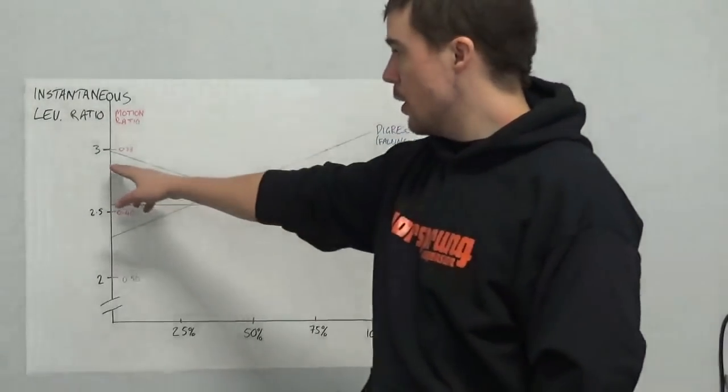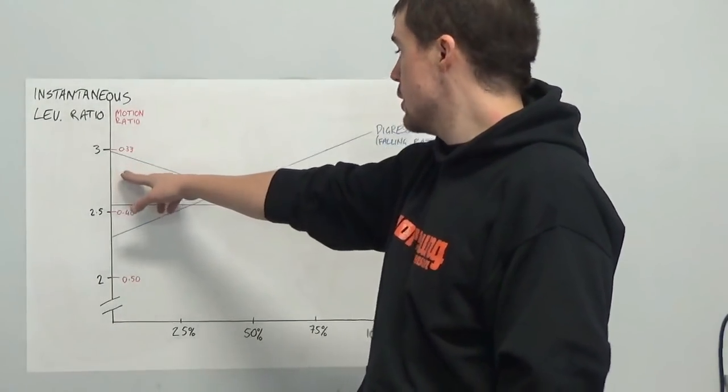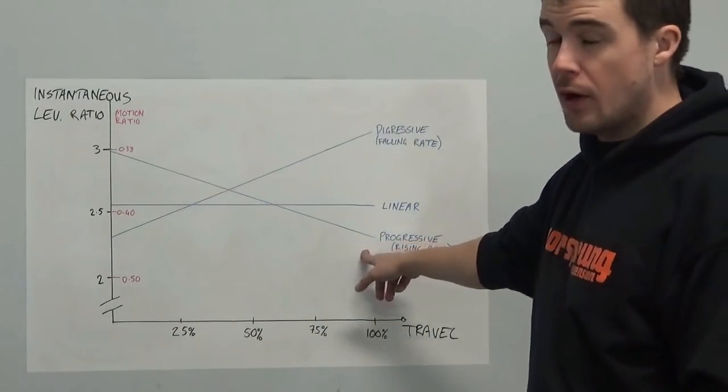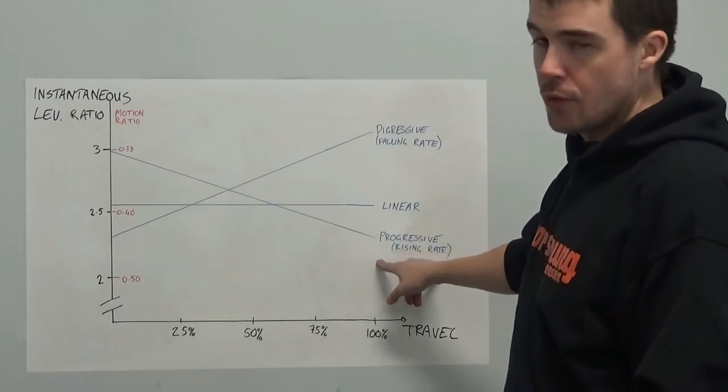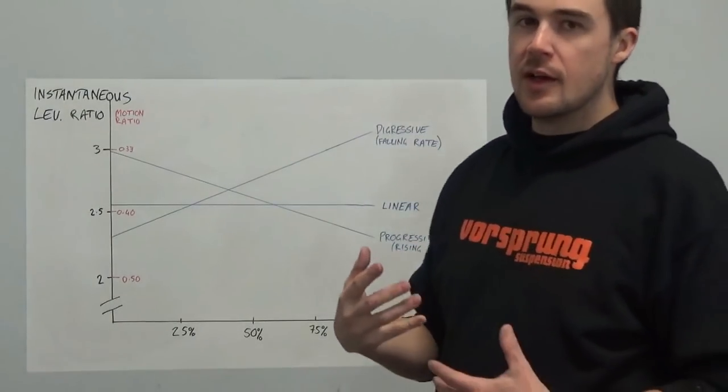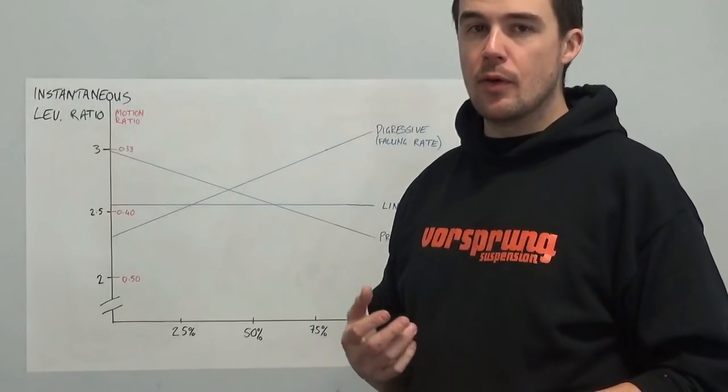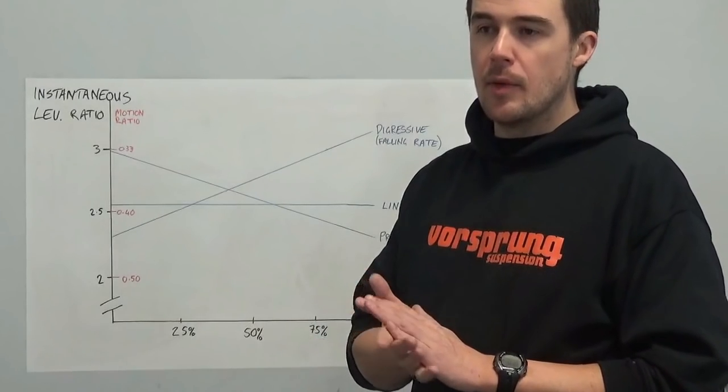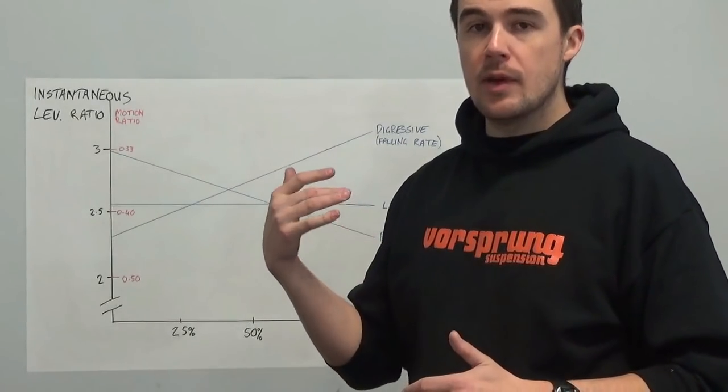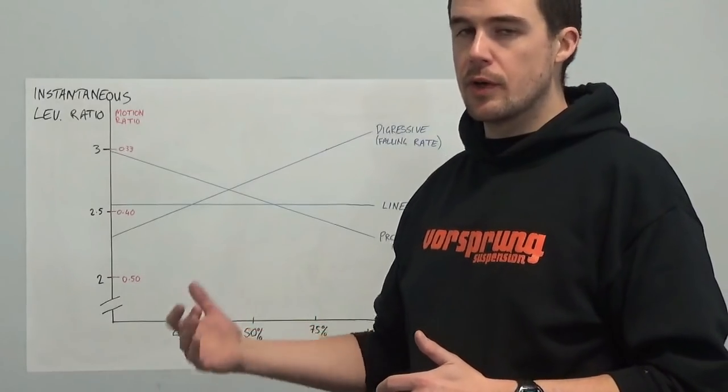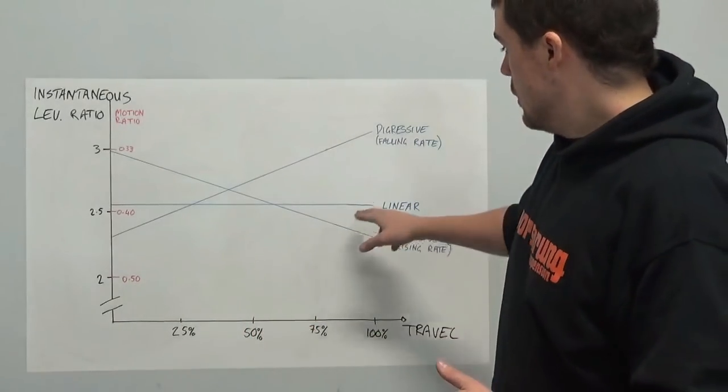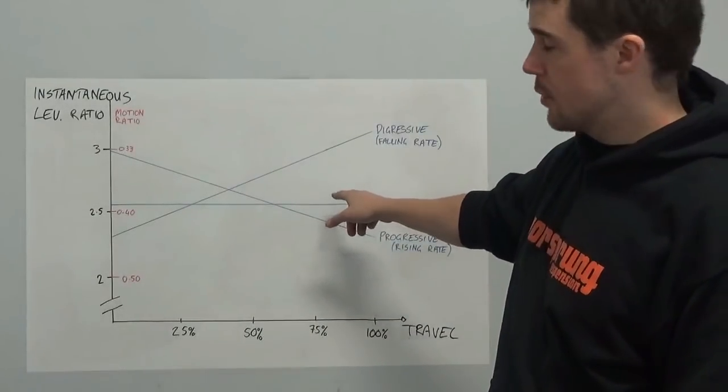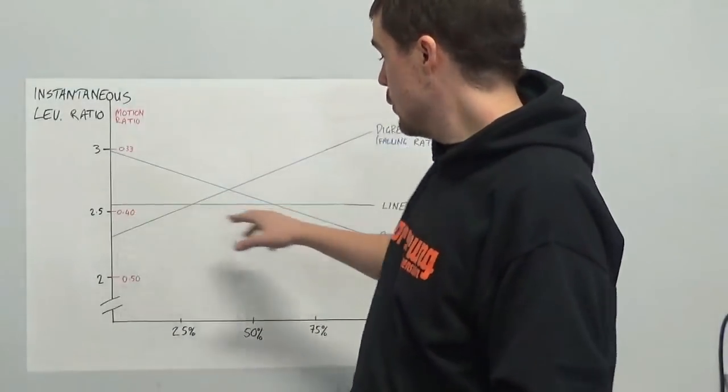Something that starts with a high leverage ratio or a low motion ratio and moves to a low leverage ratio or a higher motion ratio is considered progressive. The reason for this is that the effective spring rate, the effective damping rate for a linear spring on the shock or a linear damper, they increase at the rear wheel according to where you are on the travel. This one here, with a completely constant leverage ratio throughout travel, so no real change in that, would be considered linear.